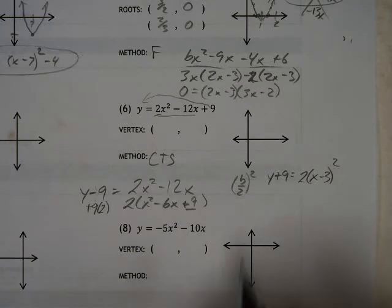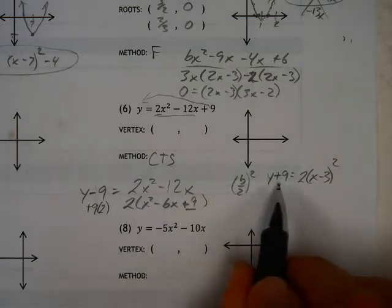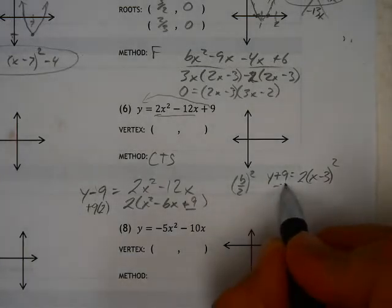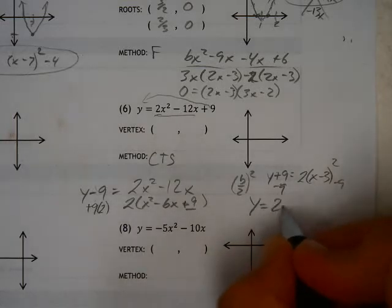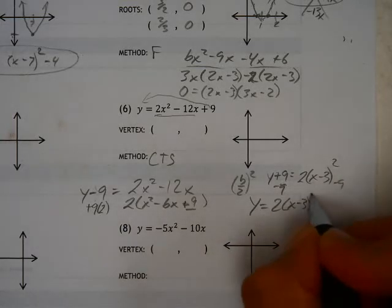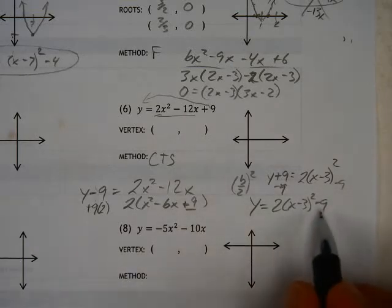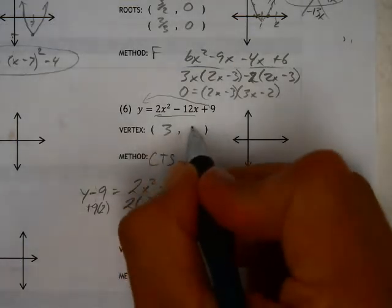And so now I've got, if I move the 9 to the other side now, if I subtract 9 from both sides, my equation is y equals 2 times x minus 3 squared minus 9. My vertex now is 3 comma negative 9.